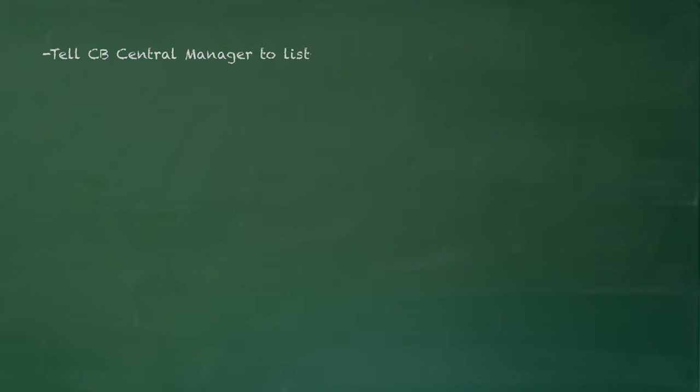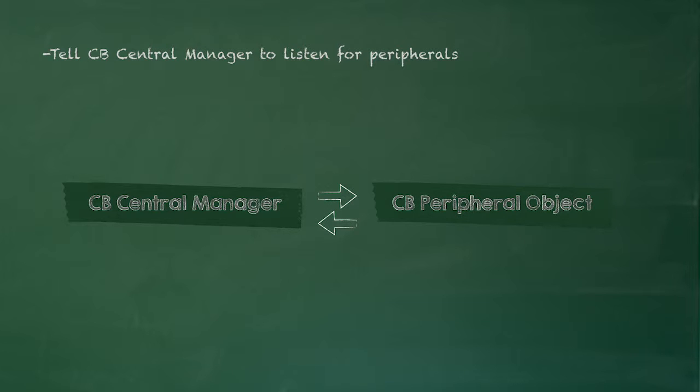The way this works is you tell the CB Central Manager to listen for peripherals. It then calls you back with a CB Peripheral object that contains the advertising packet data from any peripheral that it can hear.